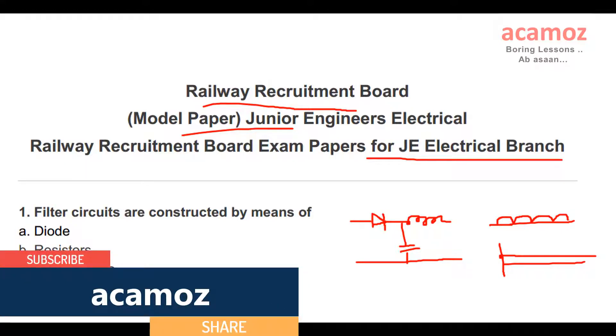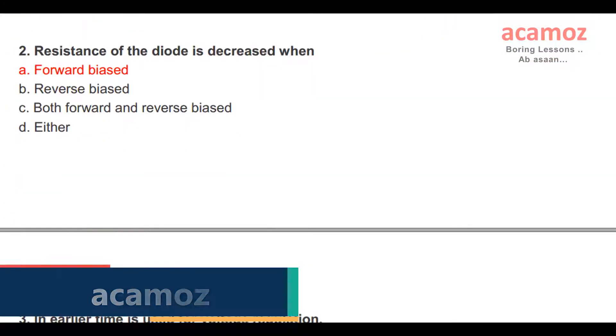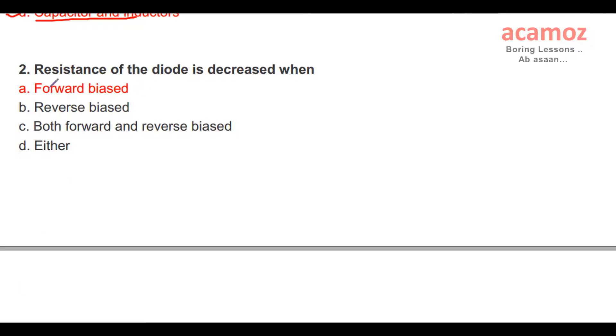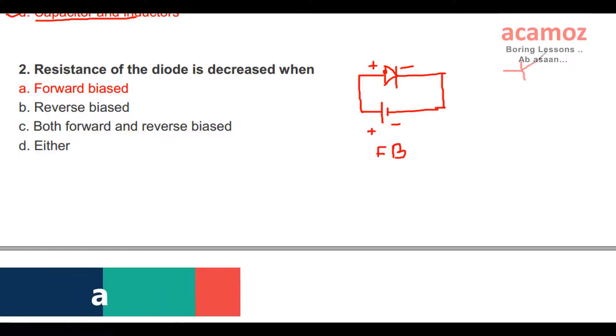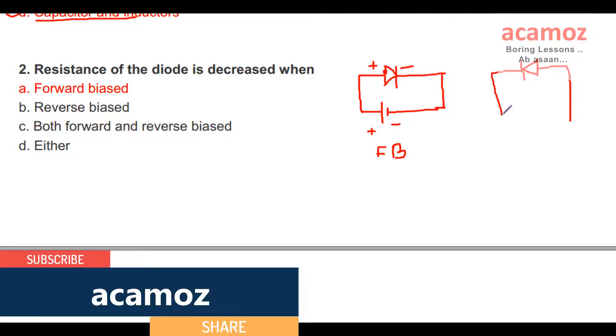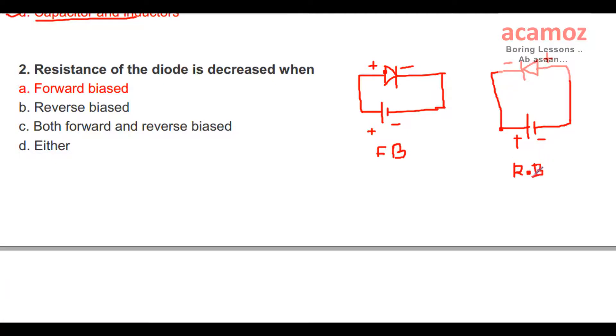Second question: Resistance of the diode is decreased when? If the positive terminal of the battery is connected to the positive terminal of the diode, it is called forward bias. If the positive terminal of the battery is connected to the negative terminal of the diode, it is called reverse bias. In forward bias, resistance is low, and in reverse bias, resistance is too high. So from the V-I characteristics of the diode, forward bias resistance is decreased. The answer is forward bias.